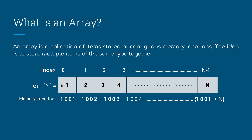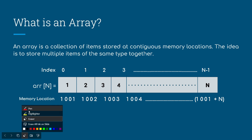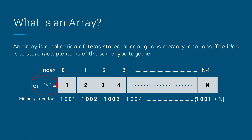Here comes the solution: if we declare arr[N], the compiler will be assigning a contiguous block of memory so that we can store similar types of data. Here, the first element is 1, then 2, and so on up to N. These are the memory blocks where we are putting data elements. You can see the memory locations are 1001, 1002, 1003 — contiguous blocks of memory. By adding an offset value, we can get the next element.